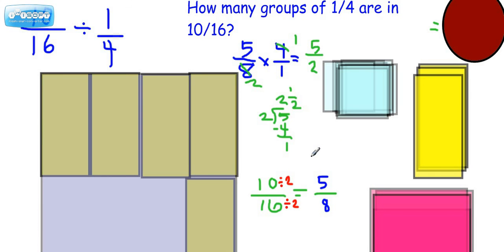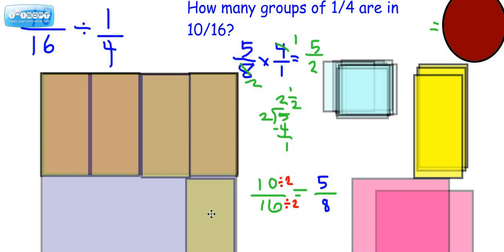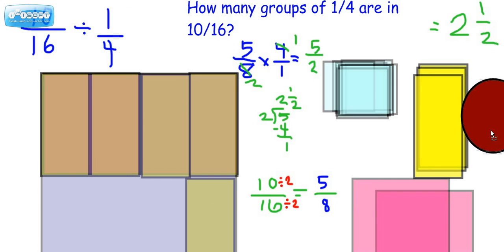But let's see if we can circle that, because we want to know how many quarters. Now, remember, this is a quarter. So do you see there's 1, there's 2, and we don't have a whole quarter, it's a half of a quarter. So the answer is 2 and a half.